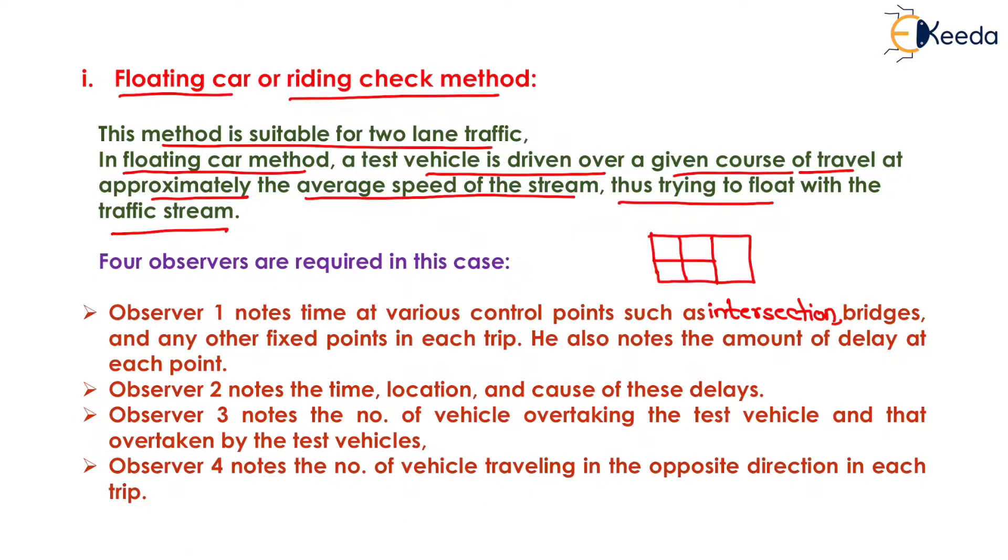In that vehicle, there will be four observers sitting, that is 1, 2, 3 and 4. Observer 1 notes time at various control points such as intersection, bridges and any other fixed point in each trip. He also notes the amount of delay at each point.